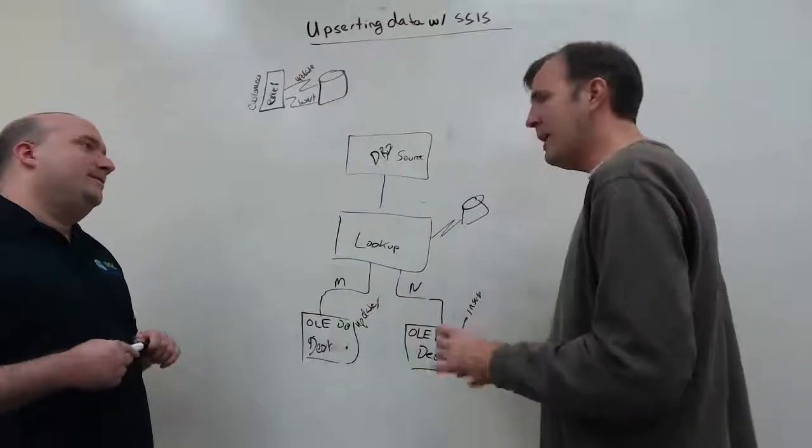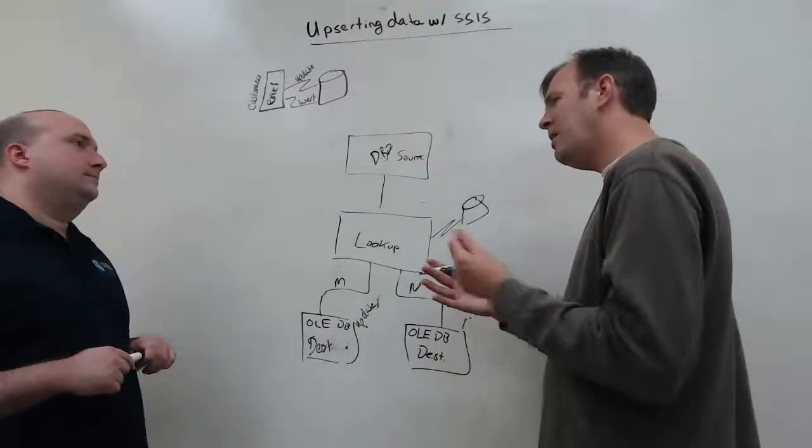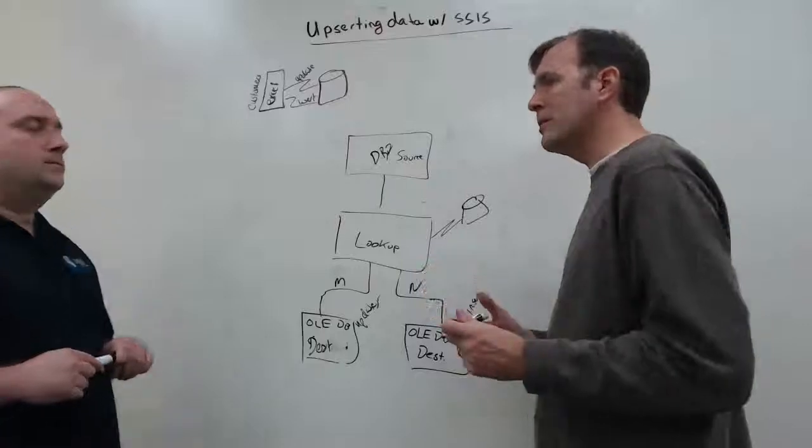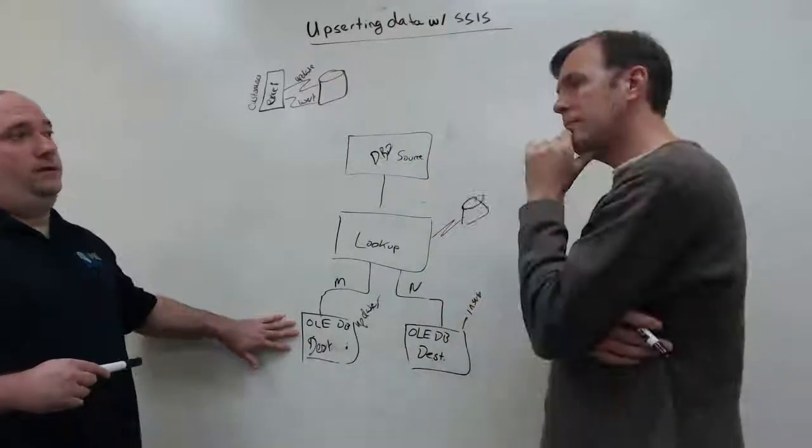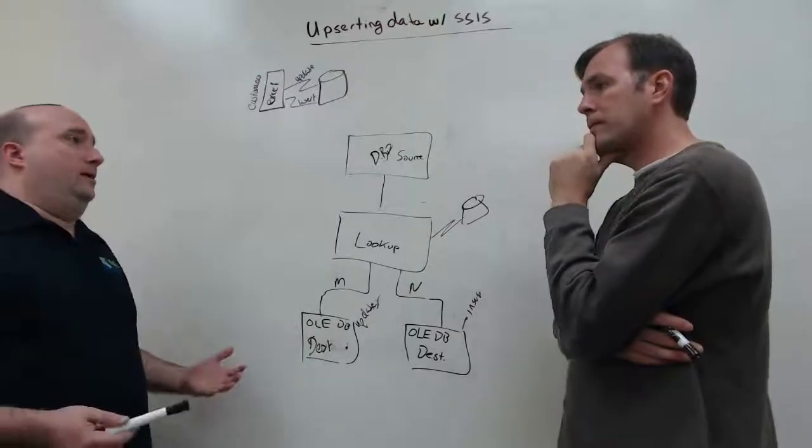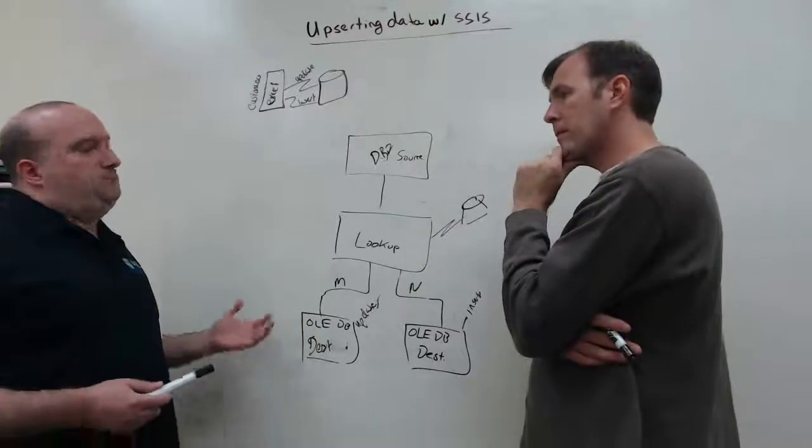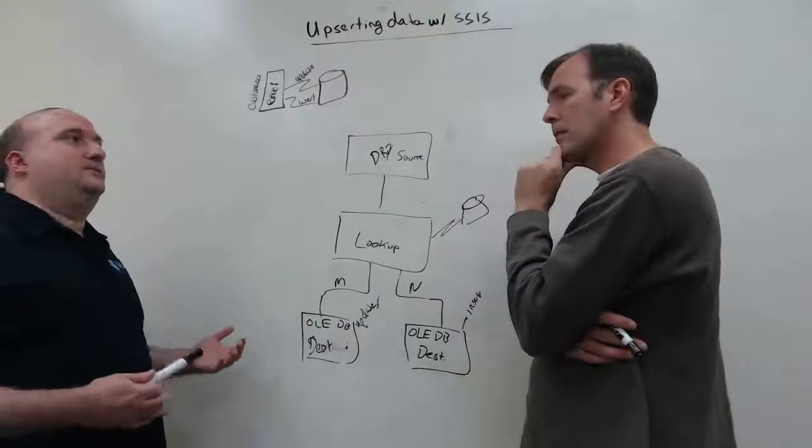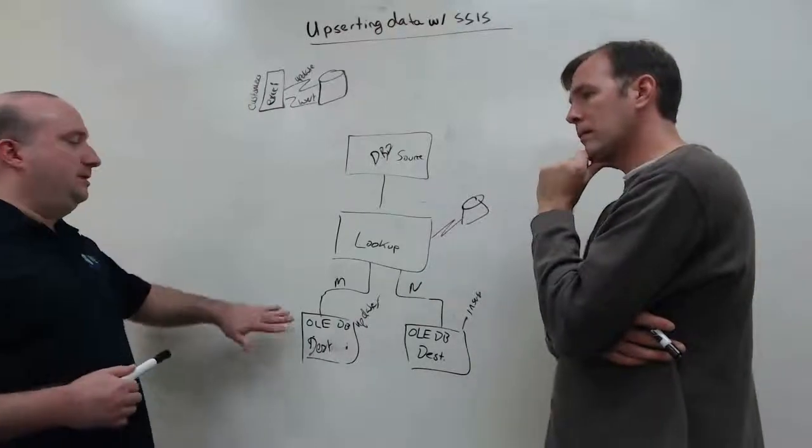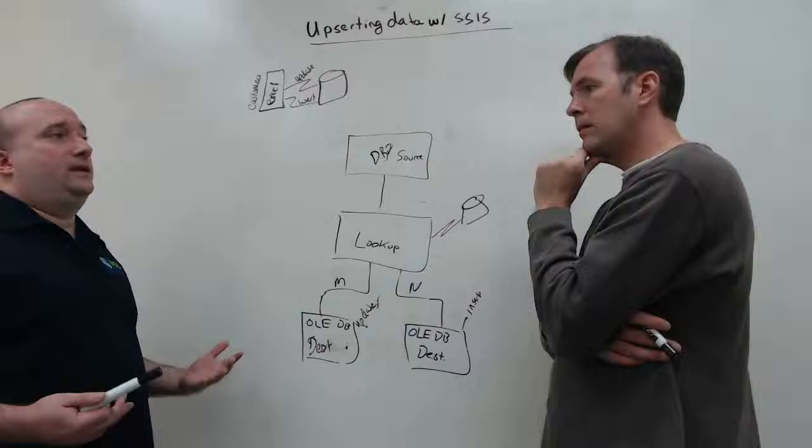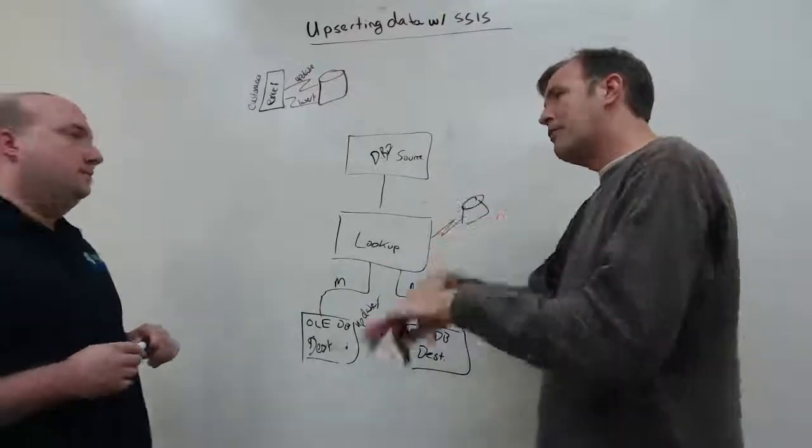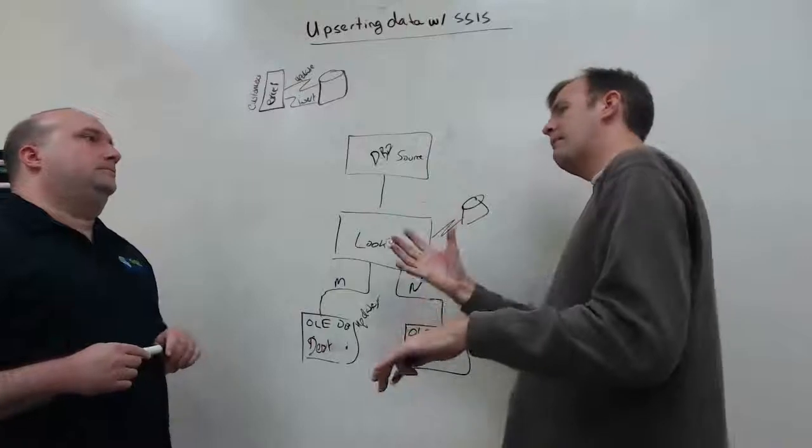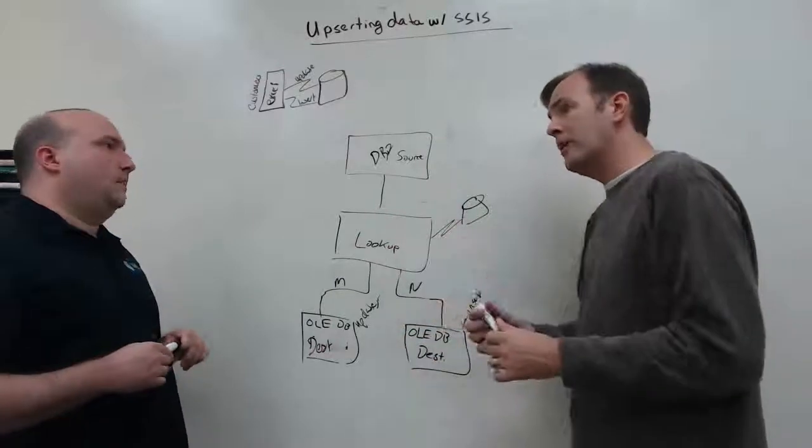The OLE DB destination we're going to use to insert updates. So, what does that mean to people watching this? Basically what we're going to do is put the rows to be updated into a staging table in our database. This could be, probably don't want to use a temp table, as SSIS doesn't really like temp tables all that much. But, you can use a working table that you created specifically for this purpose. So, after we insert all those updates, we need some kind of secondary process to do the updates themselves, right?